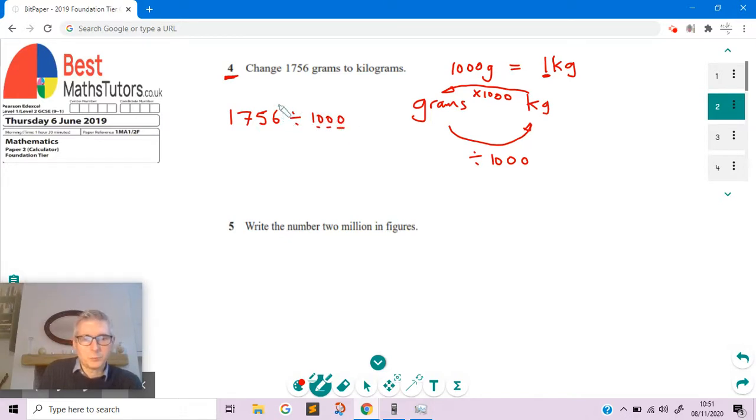If you're dividing by 10, I've moved the decimal point one place to the left. If I'm dividing by 100, I'll move it two places to the left. If I divide by 1,000, I'll move it one, two, three places to the left. So what I would get is 1.756 kilograms.